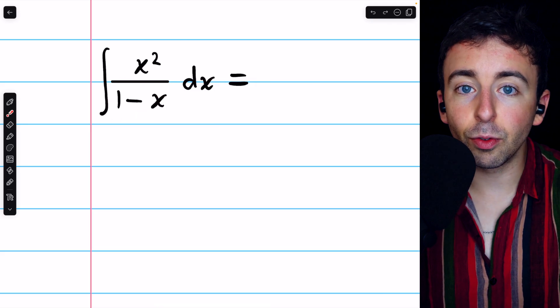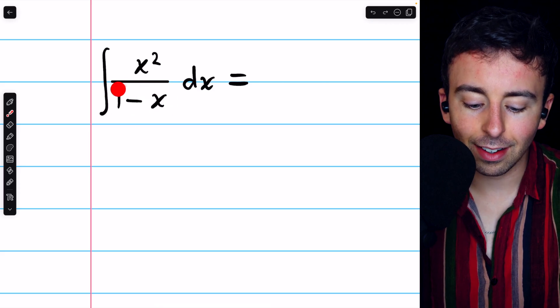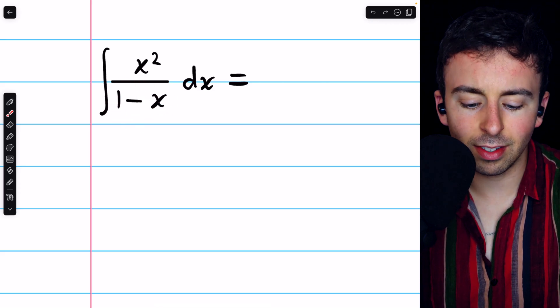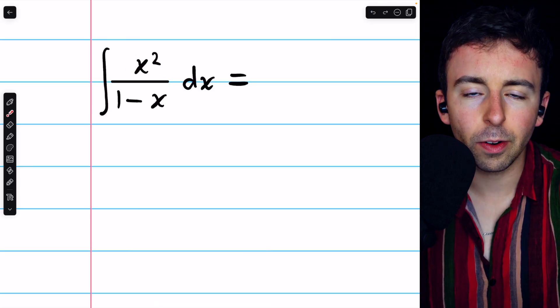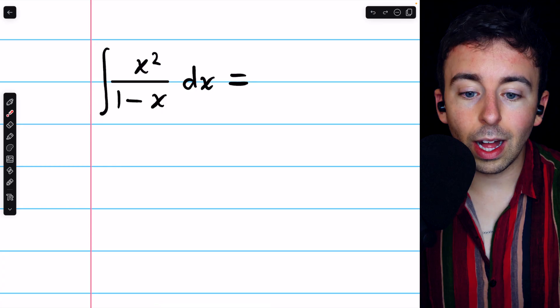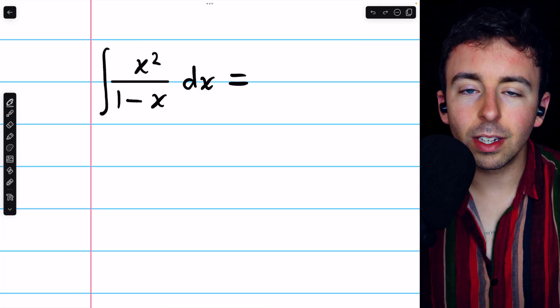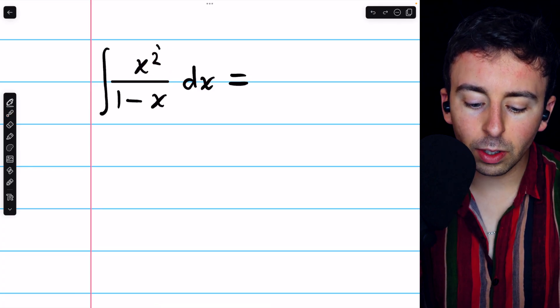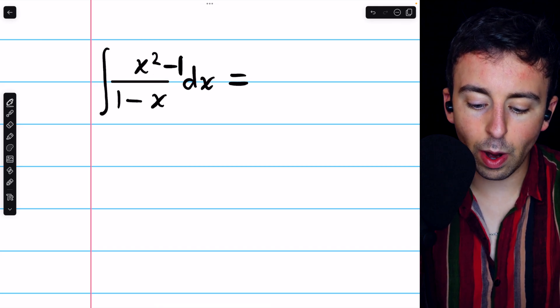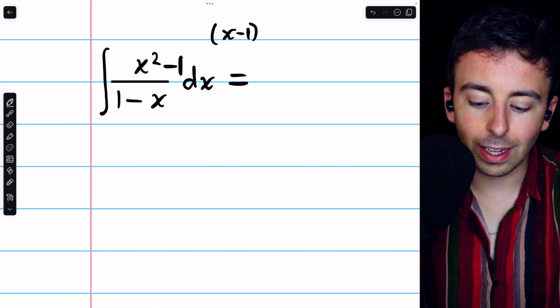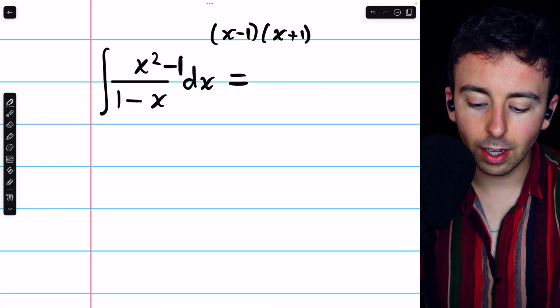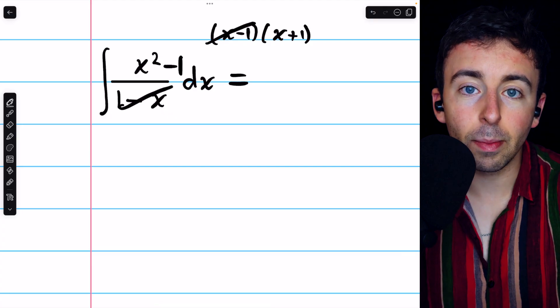On the other hand, if we let u equal 1 minus x, the derivative of that is negative 1, which is not going to capture the numerator. So what are we to do? Well, noticing that we have a square in the numerator, you may think about the difference of squares. If only the numerator was a difference of squares, then we could factor it into x minus 1 and x plus 1, and then we could cancel with the denominator.